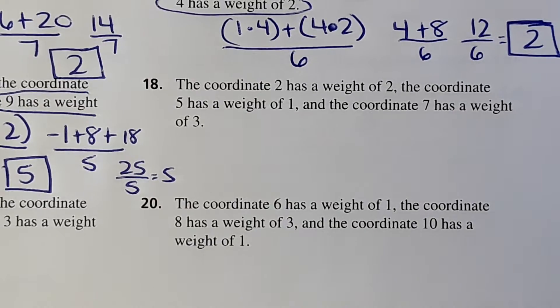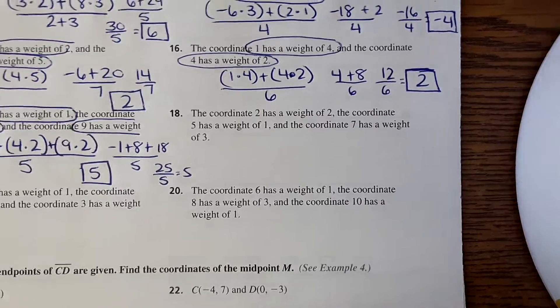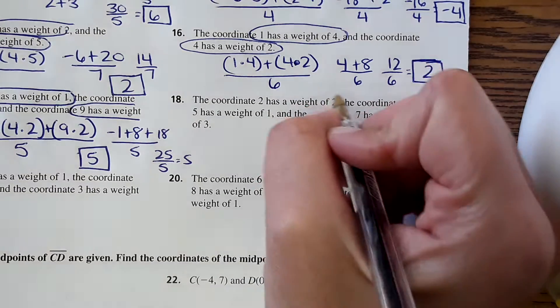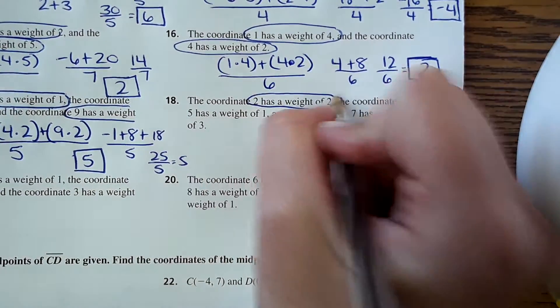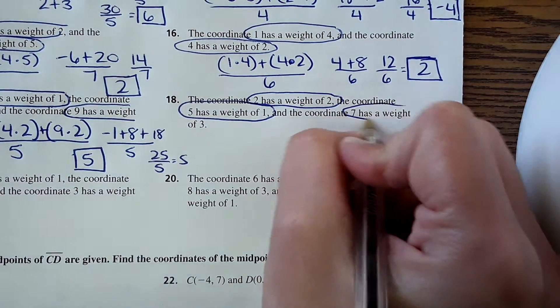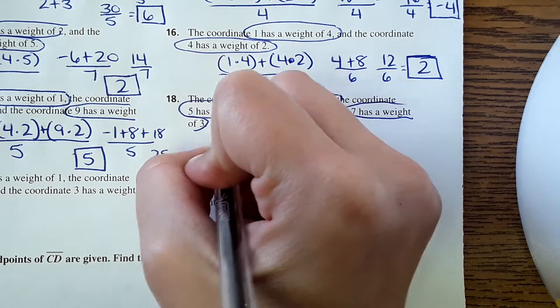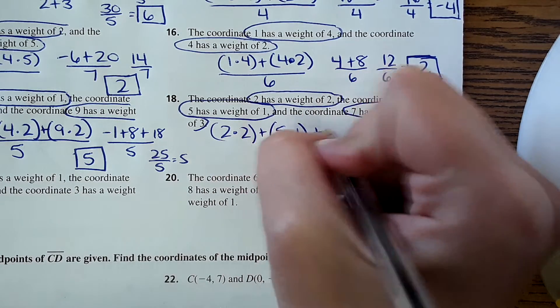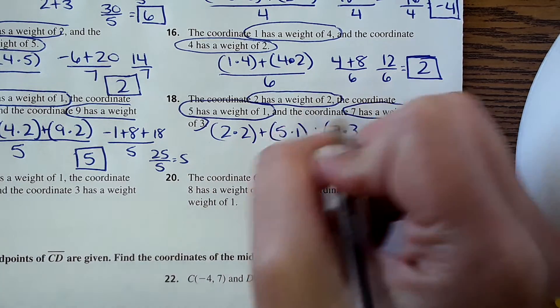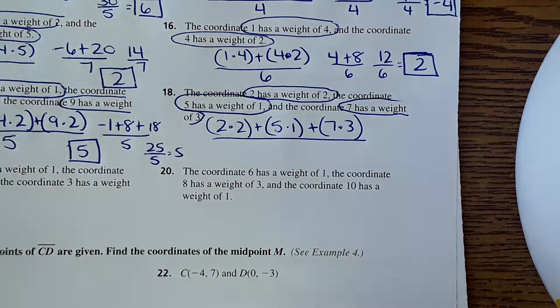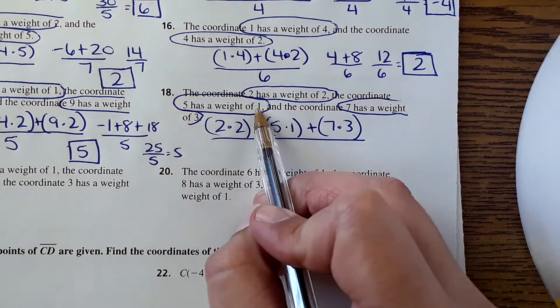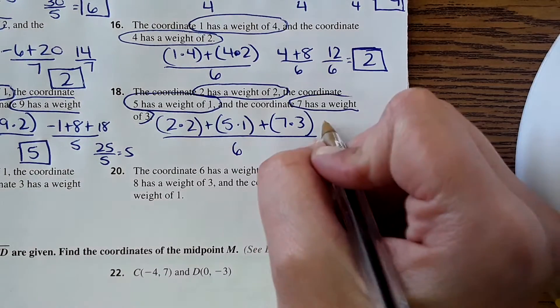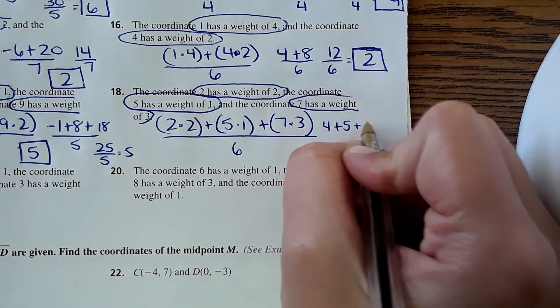Moving over here, number 18. I'll zoom out if you're still on 17. Same thing again, it has three different coordinates with different weights, so we multiply those. So 2 times 2 plus 5 times 1 plus 7 times 3. And we'll just divide that by the total weight, which is 2 plus 1 plus 3, which would be 6.